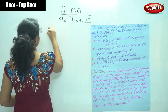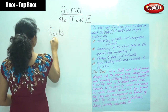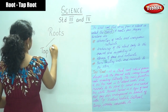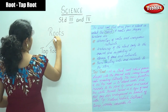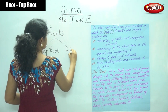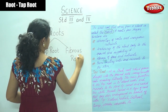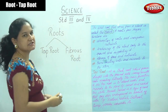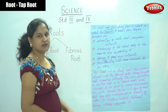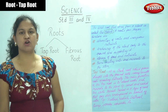The first type is tap root and the next is fibrous root. So we have two types of roots: tap root and fibrous root. Now we are going to see in detail about the tap root and look at a picture of a tap root.